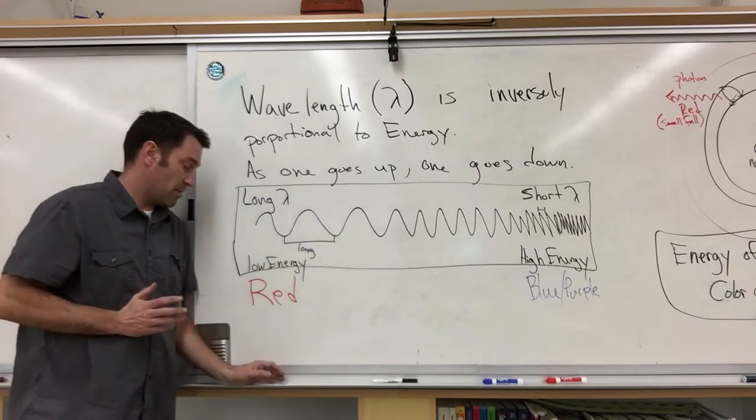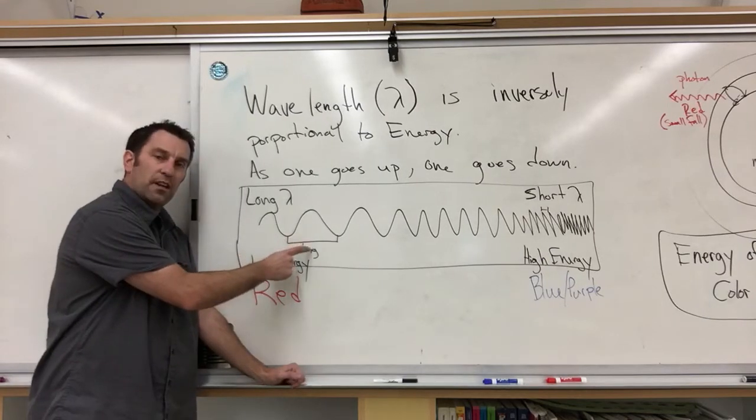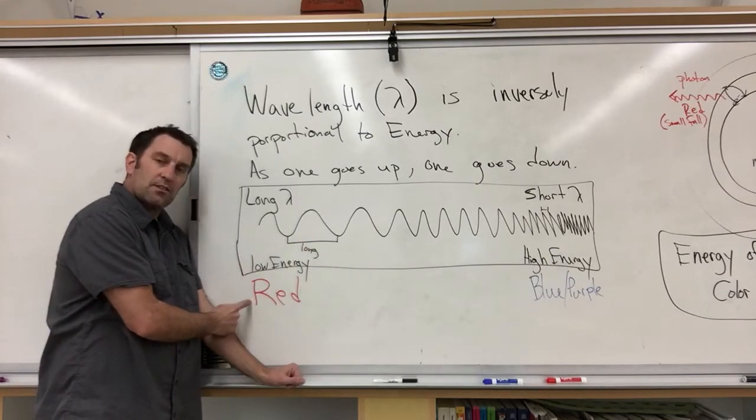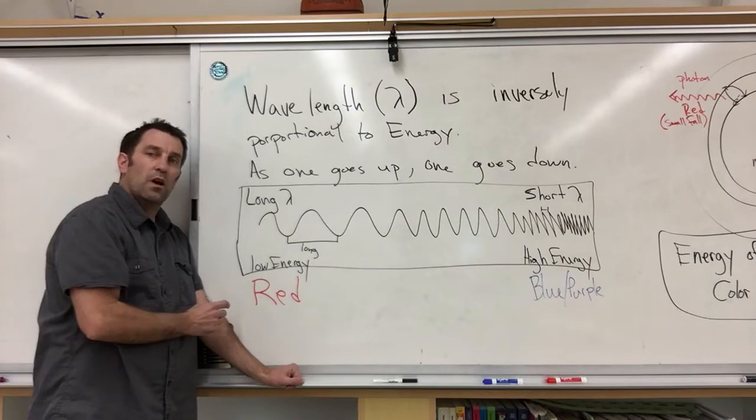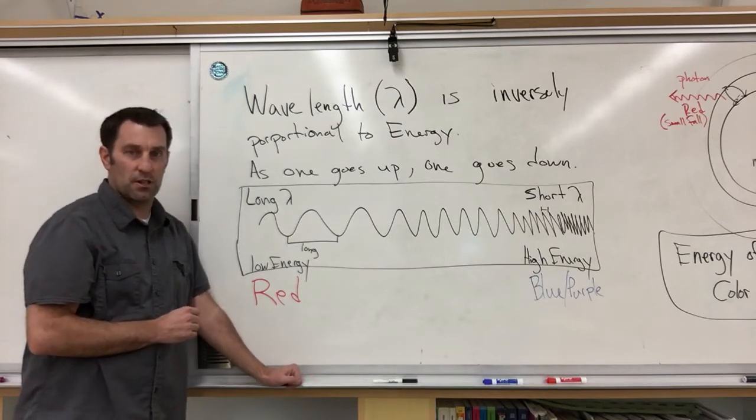Now, if we're talking about light, the long wavelengths would represent light that's a color red. Red actually is a color that is very low in energy.